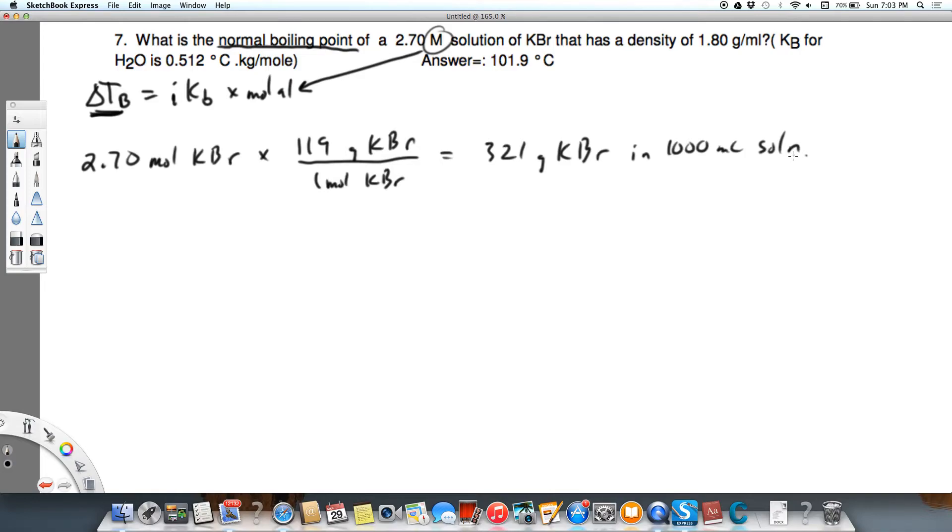So now I need to figure out how many grams of solution. So this gave me mass of solute. Okay, and now I'm going to figure out mass of the whole solution. Okay, so I'm going to take my 1,000 milliliters of solution, because that includes the 321 grams of KBr,